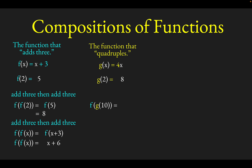We might want to try something like f of g of 10. What this function will do is it will first quadruple the 10 and then add 3 to the result. You work from the inside out — so we apply the quadrupling function g to 10 and get 40. Now we're just left with f of 40, and since f adds 3, we get 43.